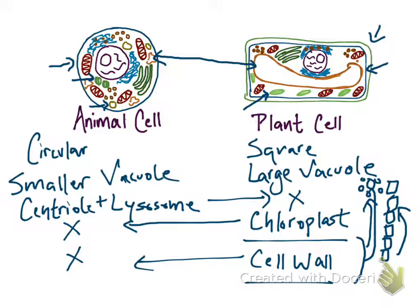Those are the differences, really — that's pretty much it. They're very small in number, but also kind of major, because the effects of the different organelles are very different. For example, if we had chloroplast, we'd be green. So they're major in a way. That's pretty much the differences between the animal cell and the plant cell. Thank you guys for watching. Bye.